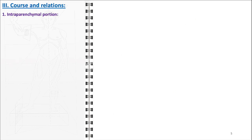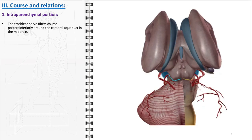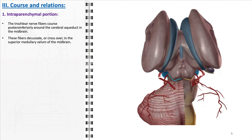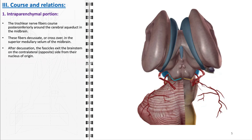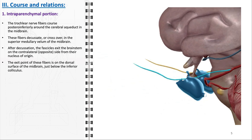The trochlear nerve has a complex path divided into four main portions. In the intraparenchymal portion, the trochlear nerve fibers course postero-inferiorly, wrapping around the cerebral aqueduct. The fibers undergo decussation — crossing over — within the superior medullary velum of the midbrain. This crossing over is a unique feature where the nerve fibers switch sides, exiting the brainstem on the contralateral side from their nucleus of origin. This decussation is critical for the nerve's function in controlling eye movements. The fibers emerge on the dorsal surface of the midbrain, just below the inferior colliculus, marking the transition to the cisternal portion.